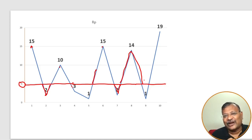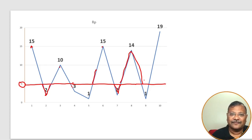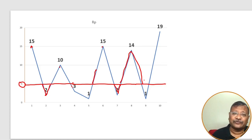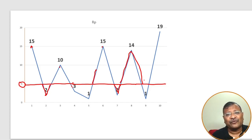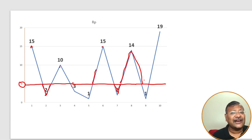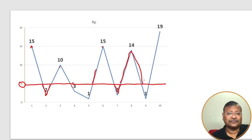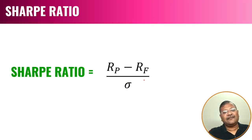When an investor evaluates return versus risk using Sharpe Ratio, he considers both the upward and the downward moves. But an astute investor is more worried about the downside move rather than the upside move. As investors, we are more often than not driven by greed and have the capability to absorb any amount of profits. But the more important question is: what is the amount of loss we can absorb? A shrewd investor is more concerned about the downside, and when comparing the risk-reward relationship, he would want to compare it against the downside move. This is exactly where Sortino Ratio comes in.